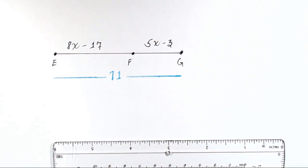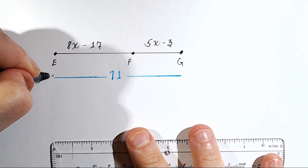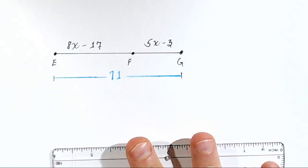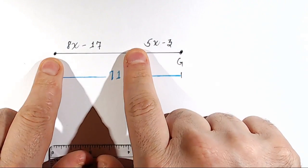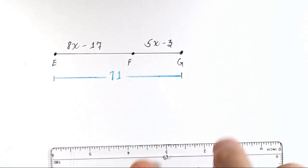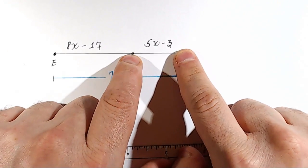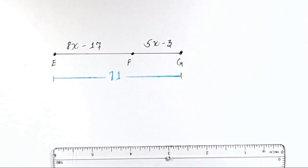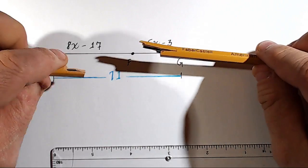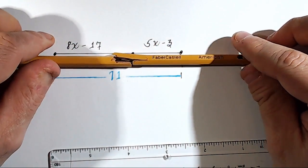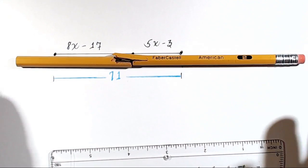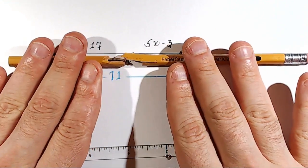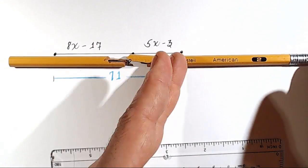Now, with that piece of the puzzle, we can go to town. Think about it. We know that this piece is 8X minus 17, we know that this piece is 5X minus 3, and that when you add those pieces together, you get 71. I'll show you exactly what I mean with this broken pencil. When you put the pencil together, you have the total distance.